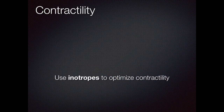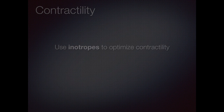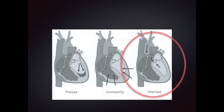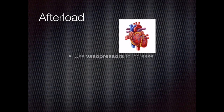We use positive inotropes to optimize contractility. They work by increasing the force of contractility of ventricles with each heartbeat. Afterload is the third and final component. We use vasopressors to act on alpha receptors to increase the vascular tone and therefore the afterload.